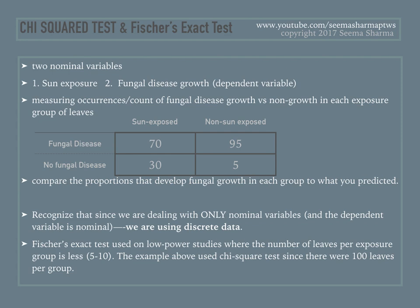Fisher's exact test is essentially like the chi-squared test, except it is used in low-power studies where the number of leaves per exposure group is small — about 5 to 10. So if the sun-exposed group had 5 to 10 leaves and the shade or non-exposed group had 5 to 10 leaves, we would use Fisher's exact test rather than the chi-squared test.